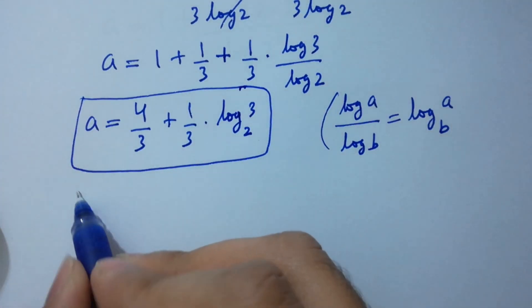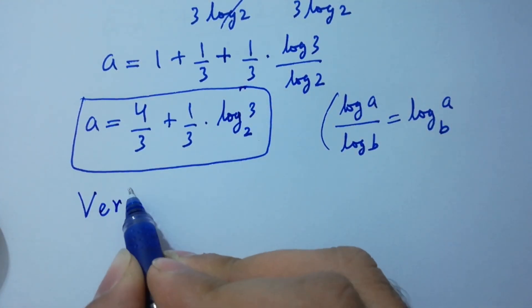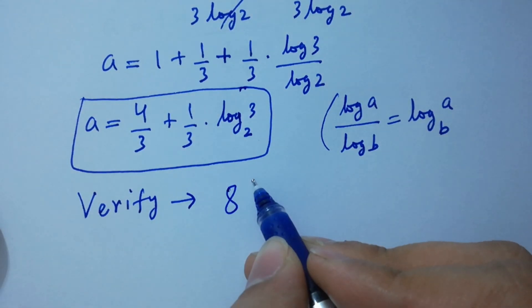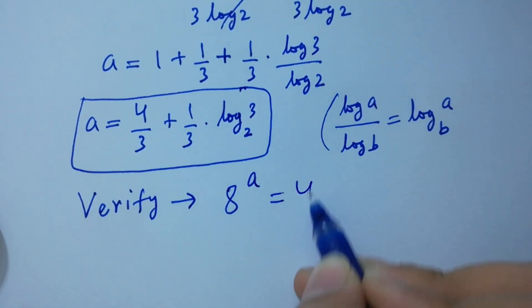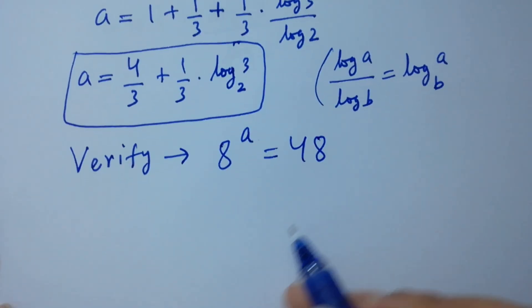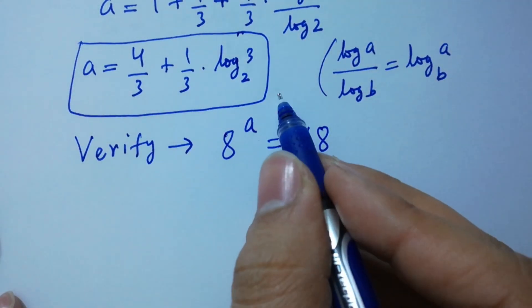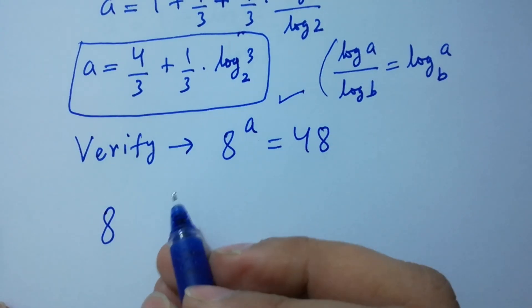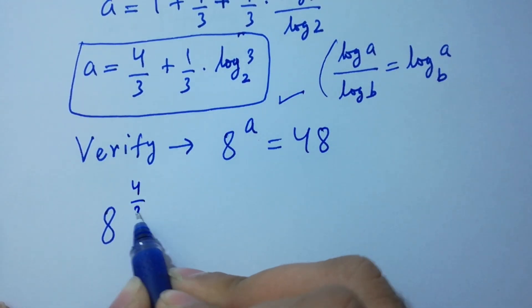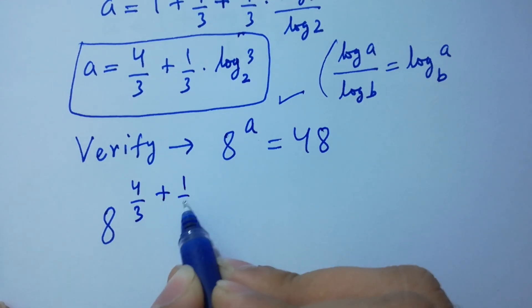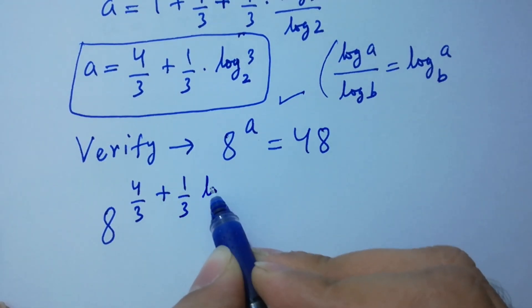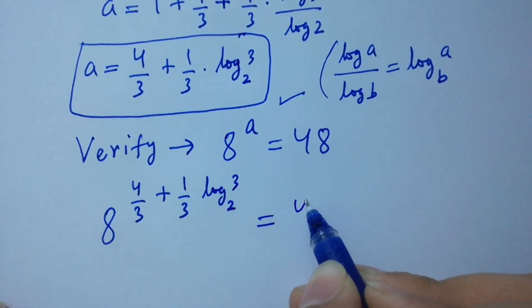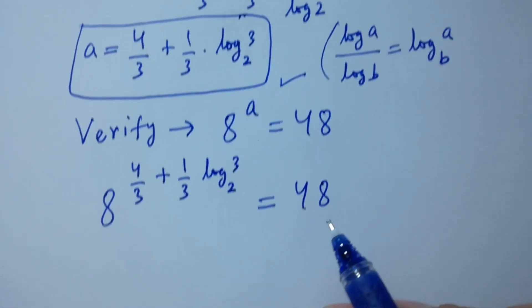Now verify. 8 to the power a equals 48. Put the value of a: 8 to the power (4 over 3 plus 1 over 3 times log 3 to the base 2) equals 48.